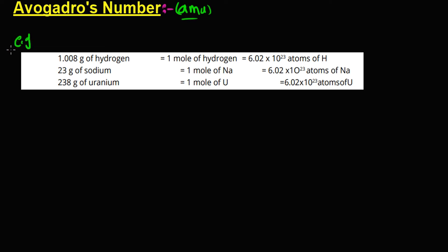Let's say we have 1.008 grams of hydrogen. The atomic mass of hydrogen in atomic mass units is 1.008, so 1.008 grams of hydrogen is one mole of hydrogen. The number of hydrogen atoms in one mole is a fixed value — this is Avogadro's number. So if we take one mole of anything, the number of atoms, molecules, or particles present will always be this fixed value.